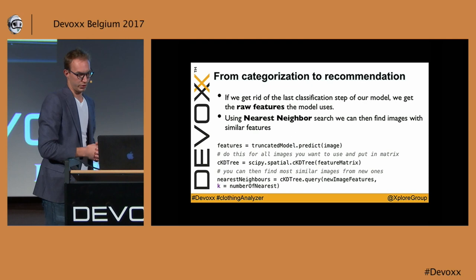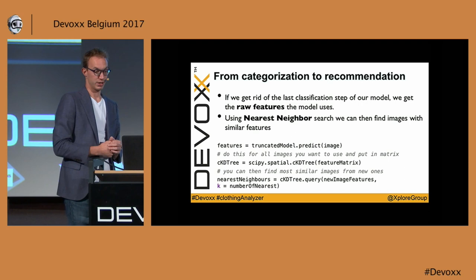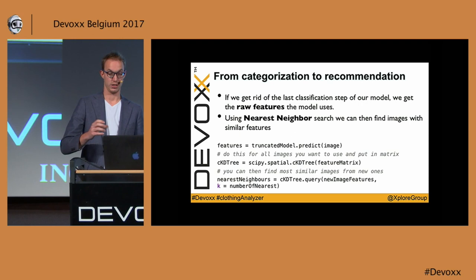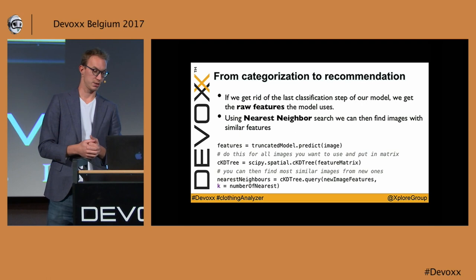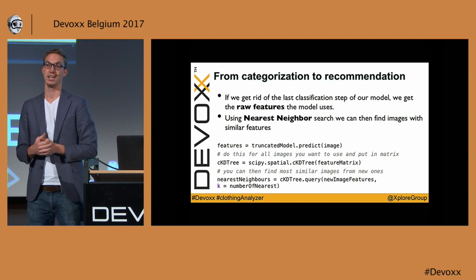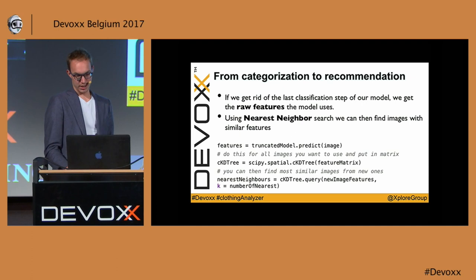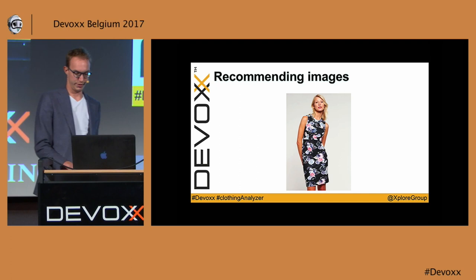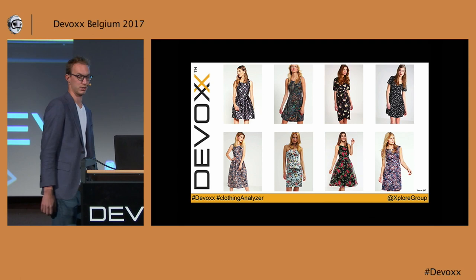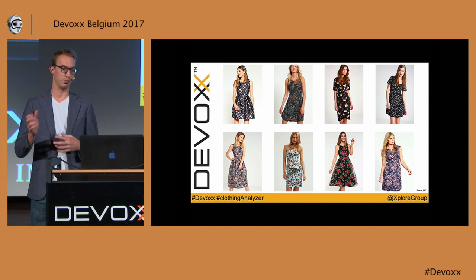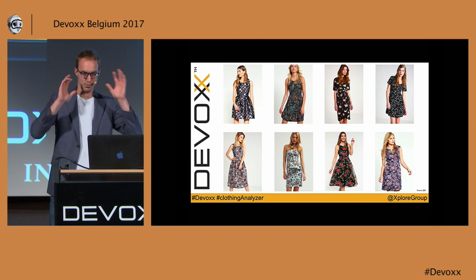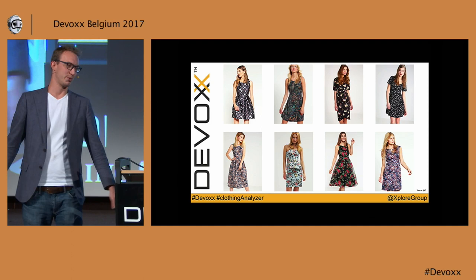We used the scipy library in Python to build a tree and find nearest neighbors. It's as simple as querying that tree with the features of a new image and asking for k nearest neighbors — say 10 recommendations — and you get 10 similar images from your catalog. For example, if we feed the image of a lady in a floral dress into the catalog, the eight recommendations are all dresses with floral prints in similar colors. The lady's blonde hair is also factored in a bit, so still a work in progress.